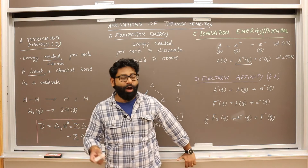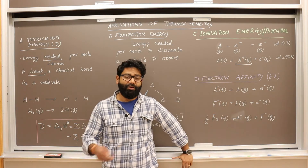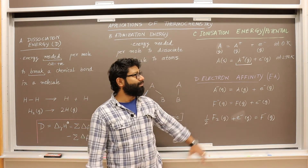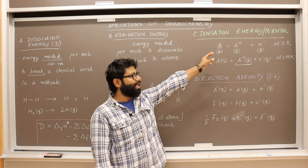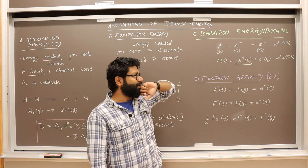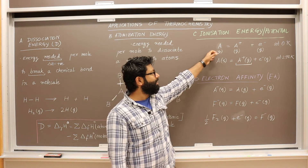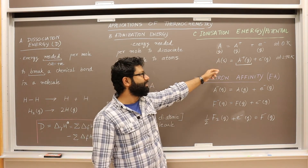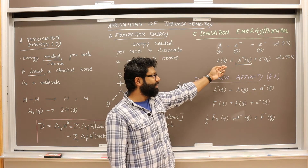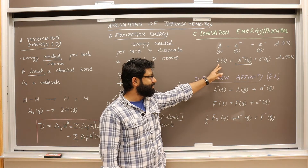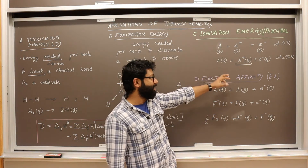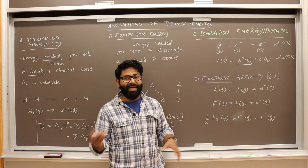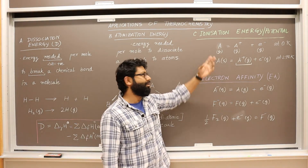Ionization potential is calculated at zero Kelvin — it's a hypothetical concept. We'll study in the second law why absolute zero is not physically possible. So ionization potential too is an abstract concept calculated at zero Kelvin. This ionization potential is an endothermic reaction — it needs energy. Just going from a solid to a gas is not ionization potential; that is just making a cation. The best you can say is that this is the enthalpy of making a cation, but not the ionization enthalpy.